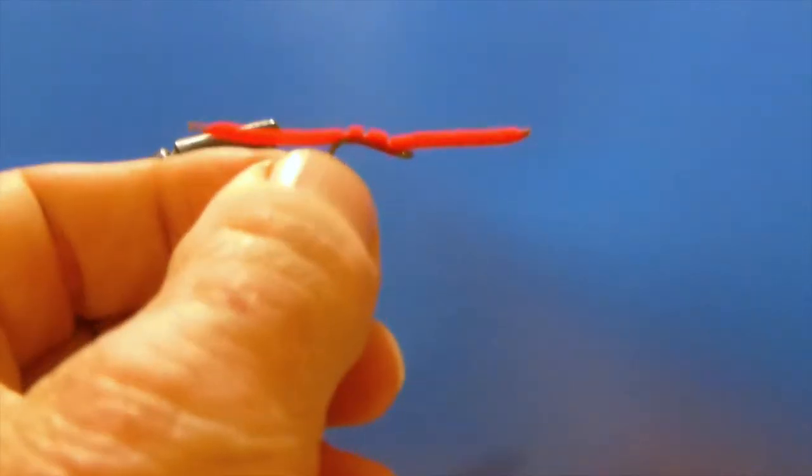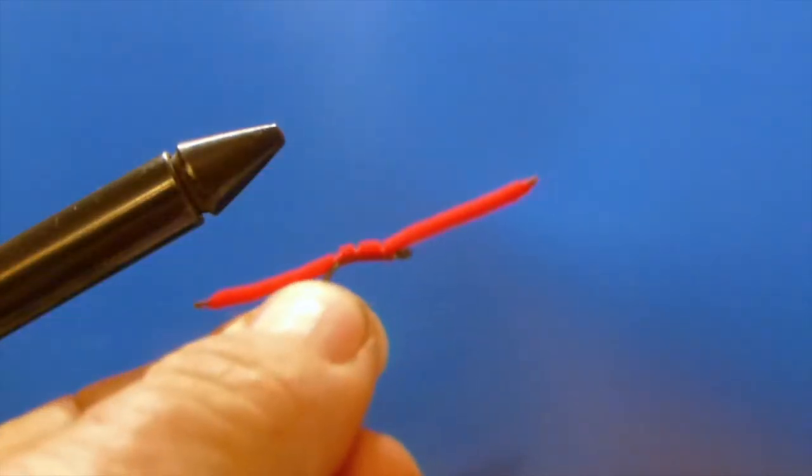First off we're going to do a San Juan worm. This is very simple to tie, just takes a few ingredients and does not take a lot of skill to tie it.